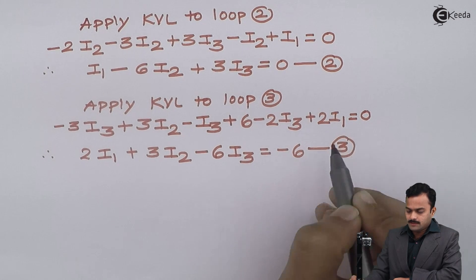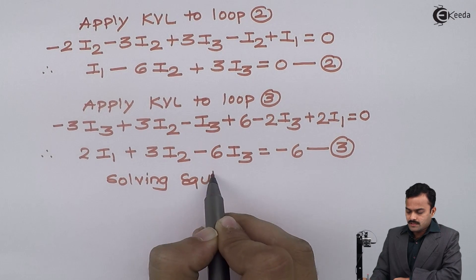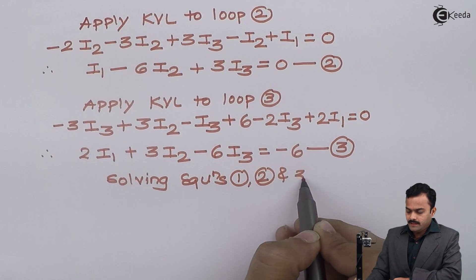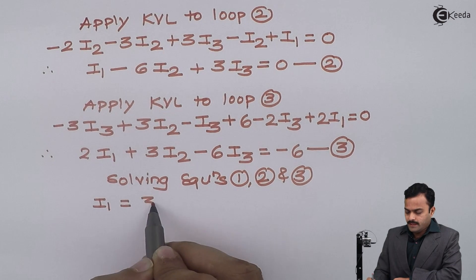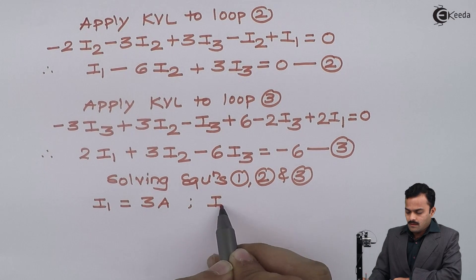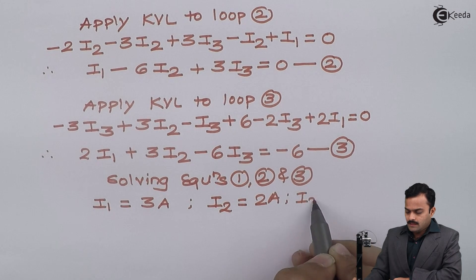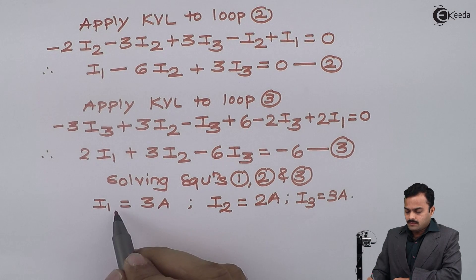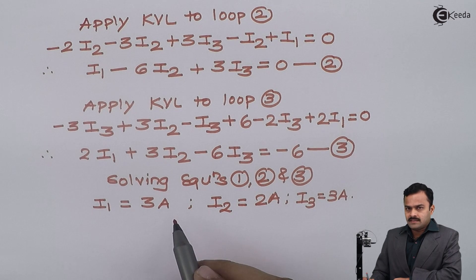After solving equations 1, 2, and 3 simultaneously, I get the values of loop currents: i1 = 3 amperes, i2 = 2 amperes, and i3 = 3 amperes. Having these mesh current values, I can now calculate all the branch currents.